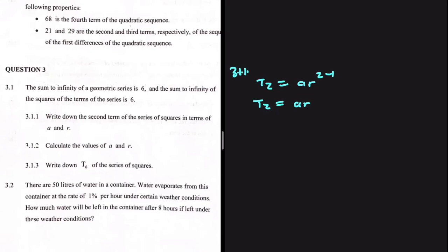But we're looking for the second term of the series of squares — all the terms are getting squared. So T2 squared equals AR squared, which equals A squared multiplied by R squared. This is the second term of the series of squares in terms of A and R.